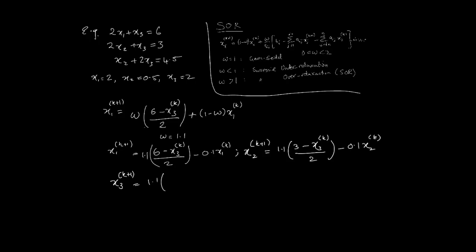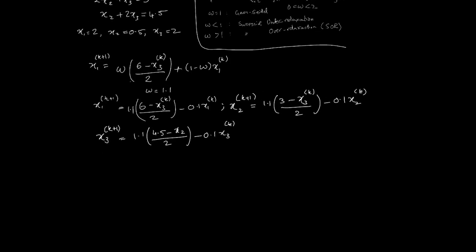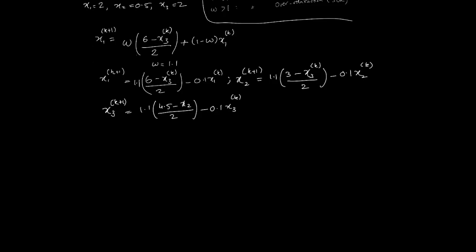Then we'll have x3_(k+1), and that's equal to 1.1 times (4.5 - x2_(k+1))/2, minus 0.1 x3_k. This is basically how we set up the SOR for this particular problem.